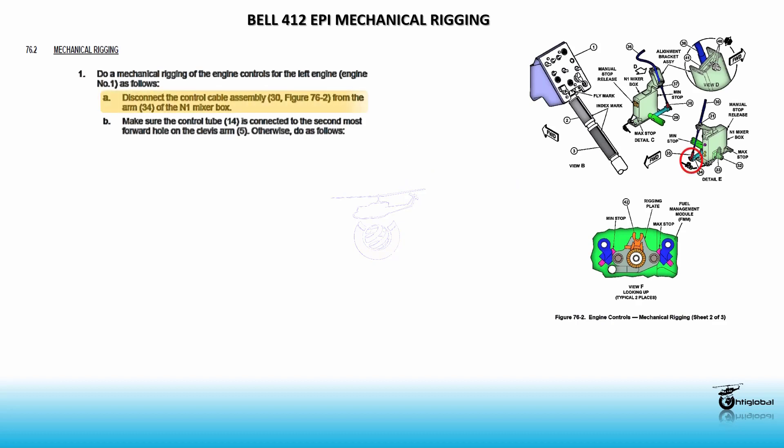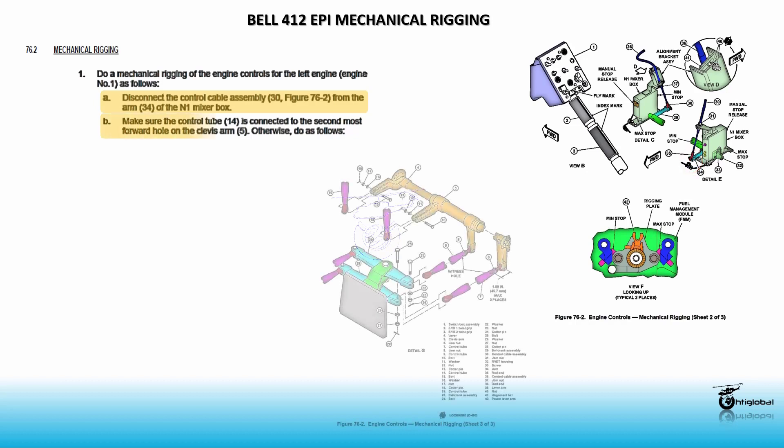Disconnect the control cable assembly 30 from arm 34 of the N1 mixer box. Make sure the control tube 14 is connected to the second most forward hole on the clevis arm 5, otherwise do as follows.